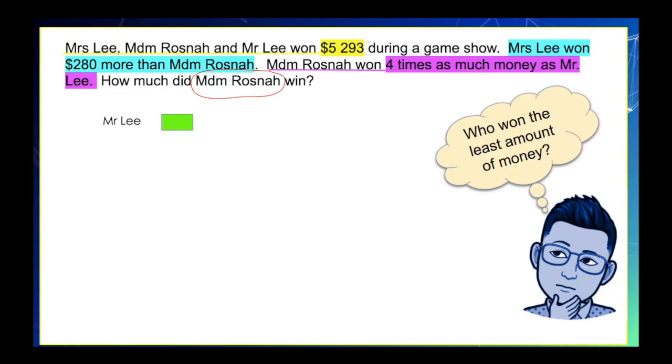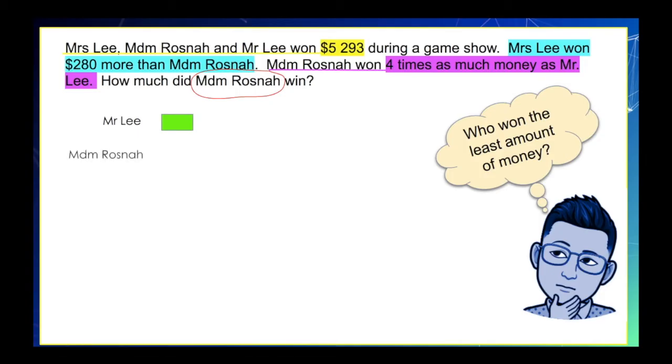Next, do you notice this statement, Madam Rosnah won four times as much money as Mr. Lee. So, we can easily draw the model representing Madam Rosnah's winnings by drawing four units.